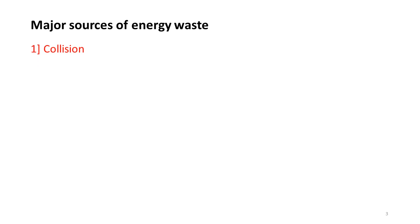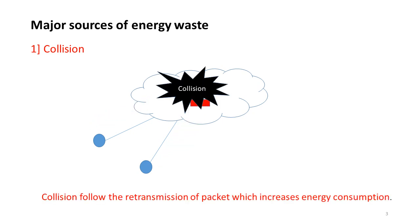The first one is collision. Suppose in a network, if we have two nodes and these two nodes are sending packets at the same time, then these packets collide. When collision occurs, retransmission of packets takes place and this retransmission again increases energy consumption. This source of energy waste should be avoided.